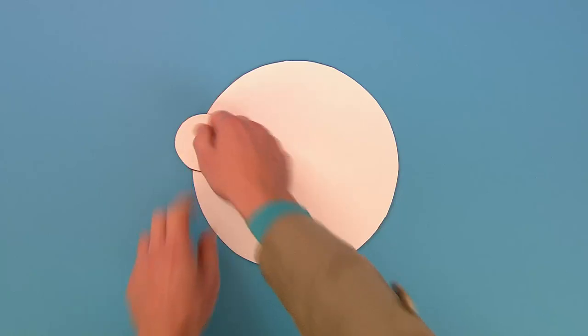Now stick on some triangle shaped cardboard pieces. One for the fin, and one underneath the body like this for the tail.